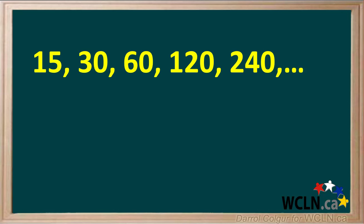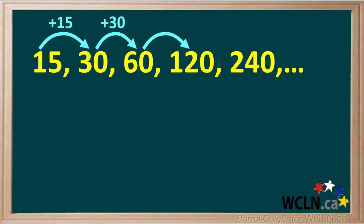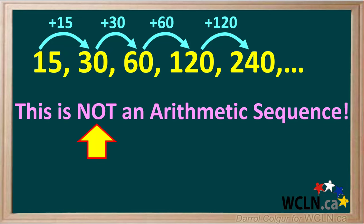Now we'll consider this list of numbers. To get from 15 to 30, we must add 15. To get from 30 to 60, we must add 30. To get from 60 to 120, we must add 60. And to get from 120 to 240, we must add 120. We see there is no common difference, so this is clearly not an arithmetic sequence.